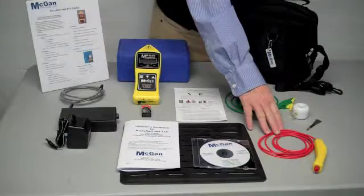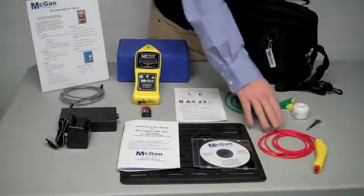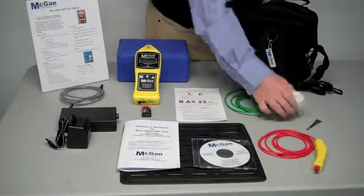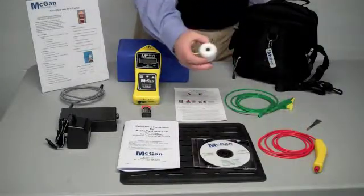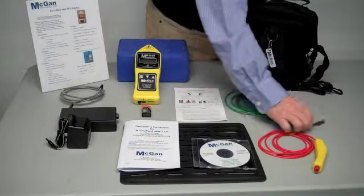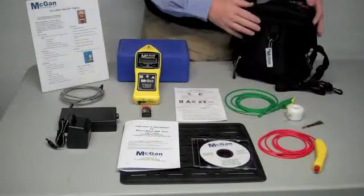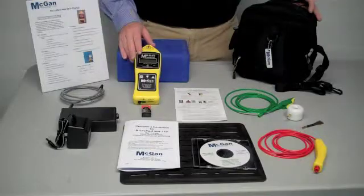A high voltage lead, round wire, ring electrode, and brush electrode. That's what comes in the kit for the MM5KV.